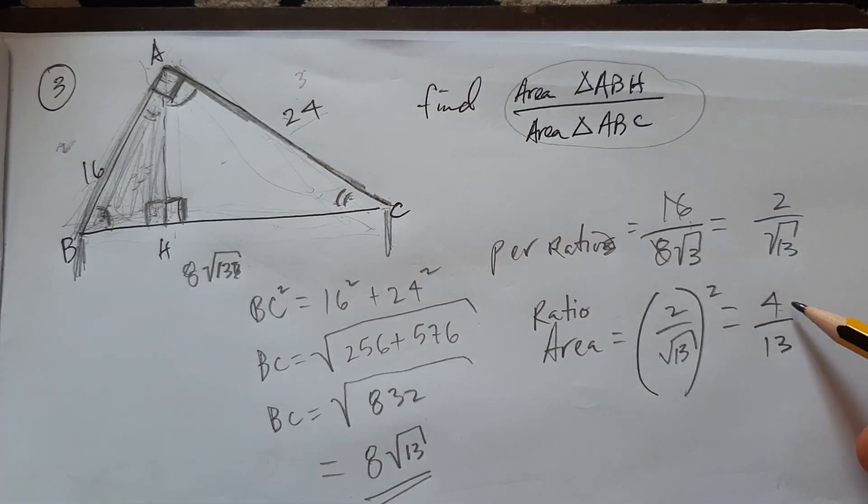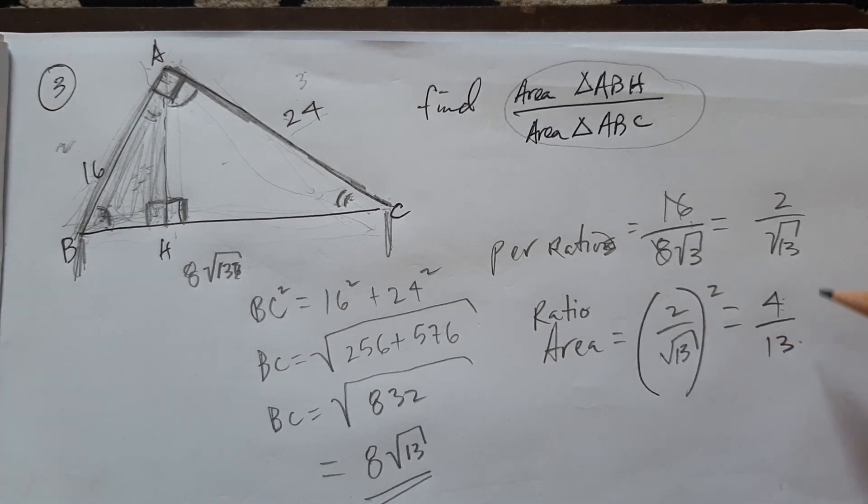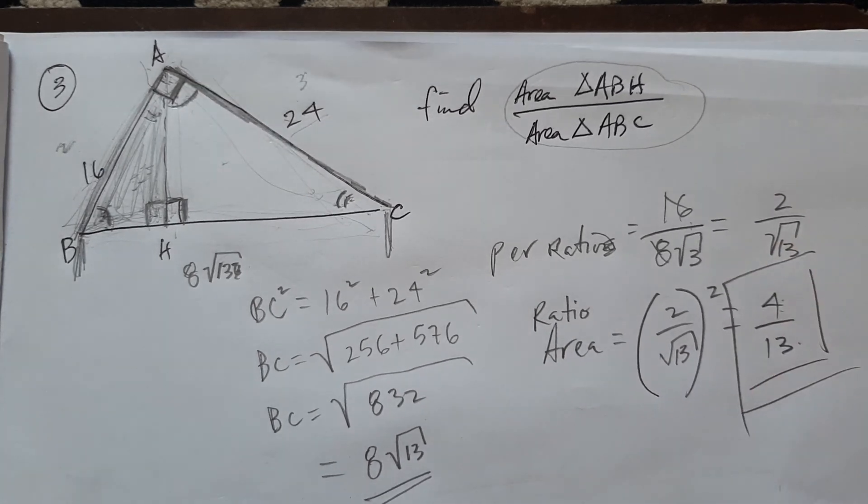Closely, anyways. 4 times 3 is 12. So that's the ratio of the areas. Okay. That's all there is to it. That's the problem.